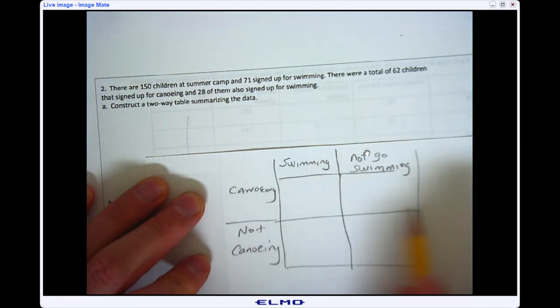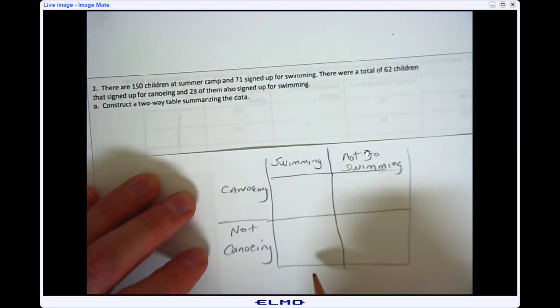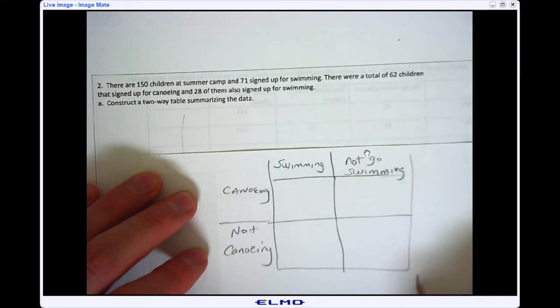So then, if you look at this two-way table, I'm going to start filling out some things I know. We know, the first part of the problem, that we have a total of 150 campers. And then it says, of those campers, 71 signed up for swimming. So here's swimming, so the total number of campers that went swimming were 71.